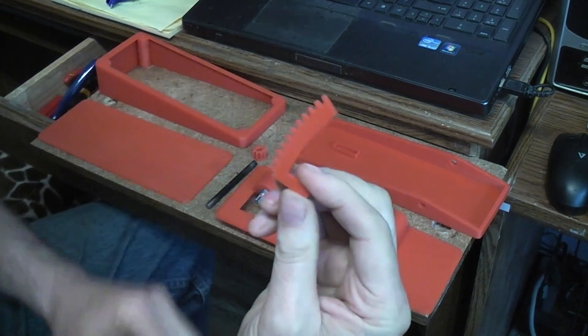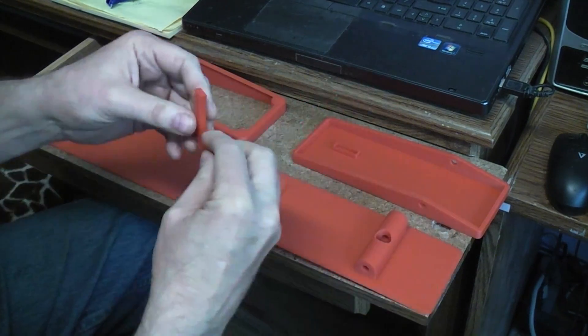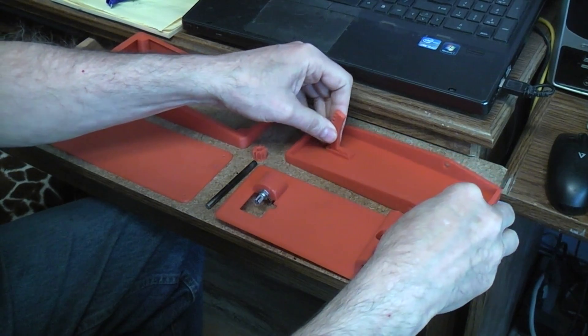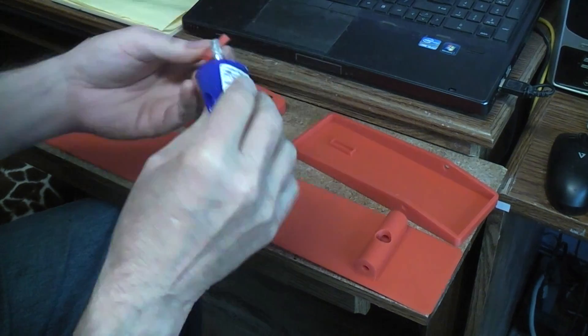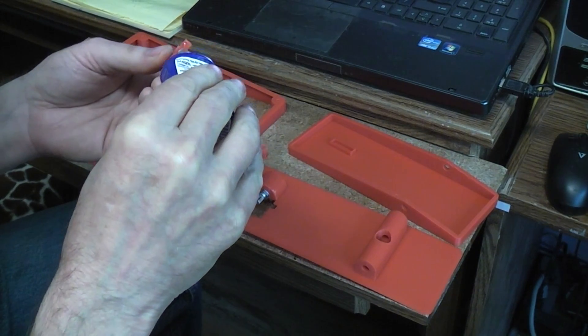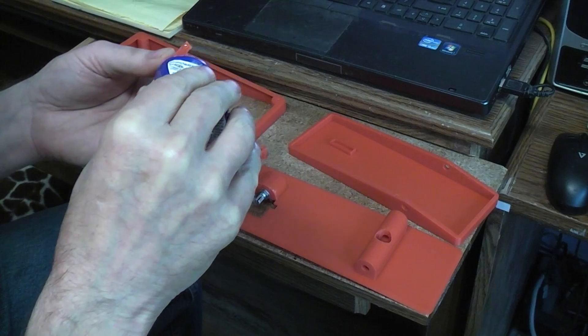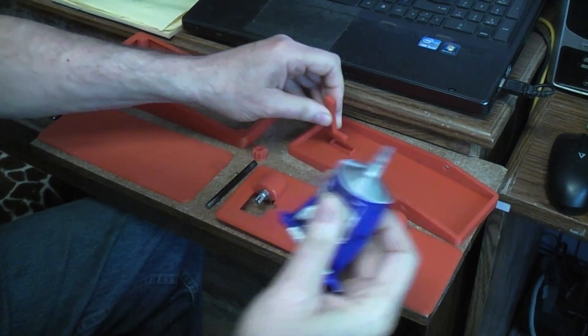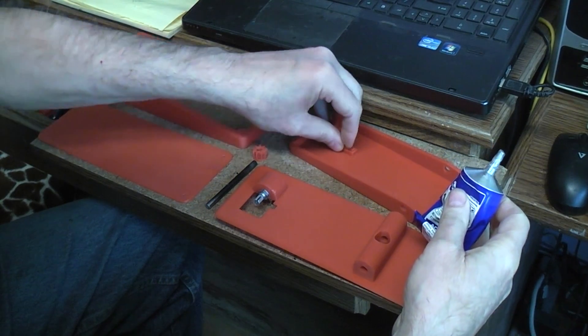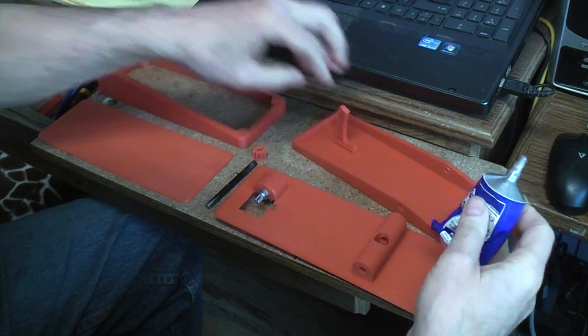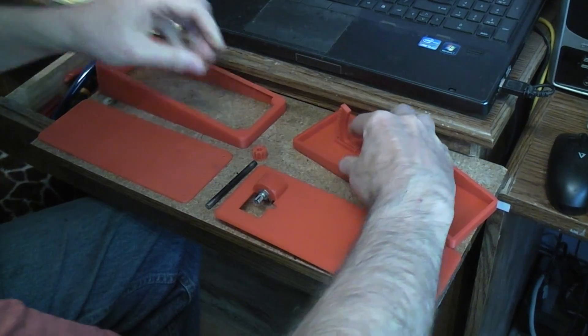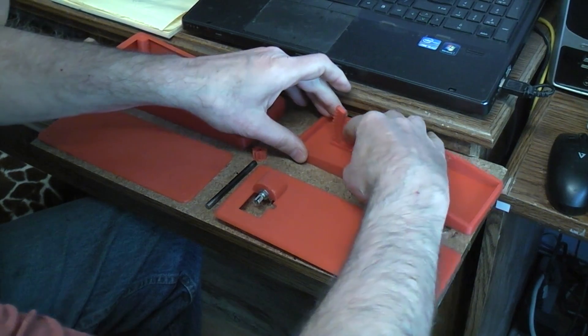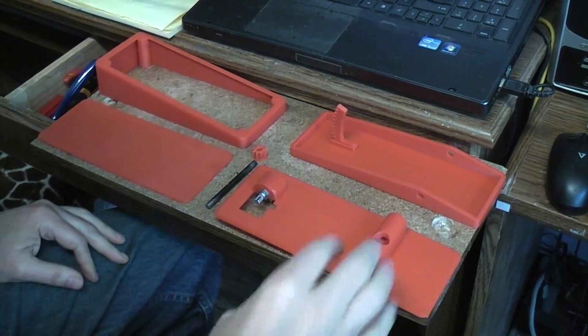I'm going to print this one art gear which we're going to glue into the slot so that can be setting up. I'm going to use the Weld-On number 16 because it actually melts PLA. They become one—the glue joint will not break. The plastic around the glue joint will break before the glue joint breaks because they've actually melted to become one, and it's very fast setting, much better than super glue.